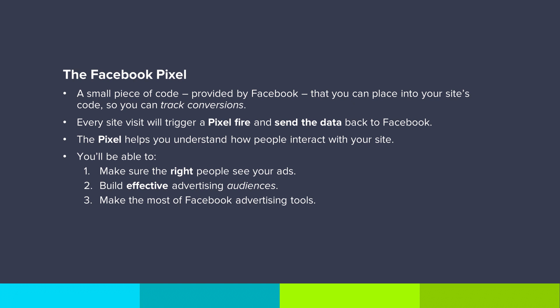The Pixel is a small piece of code provided by Facebook that keeps track of how users interact with your site. When someone visits your site and takes an action, the Pixel is triggered and fires a report over to your data bank. Having the Pixel running on your site means you're able to effectively measure your advertising by understanding exactly how people interact with your site.